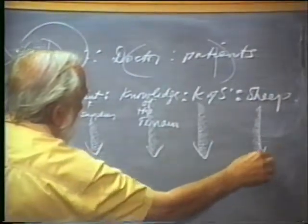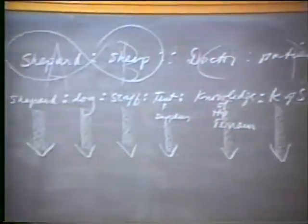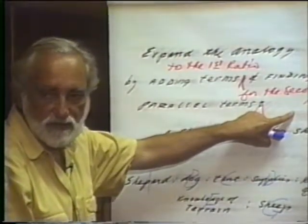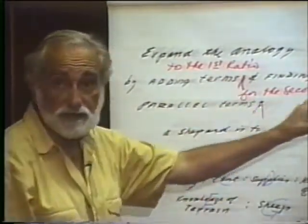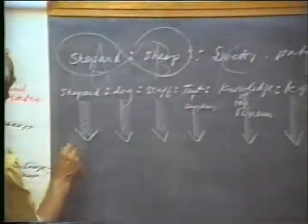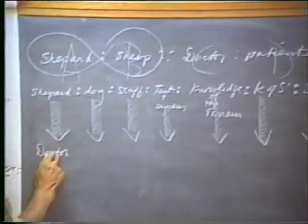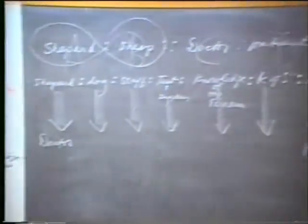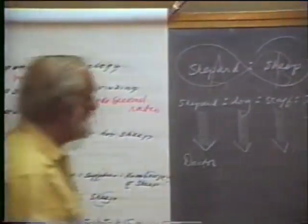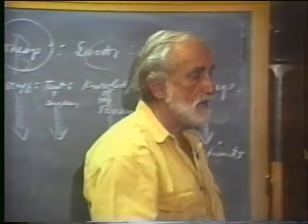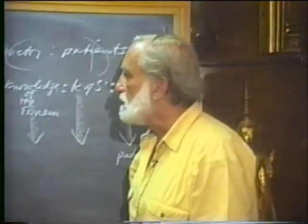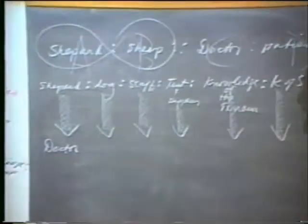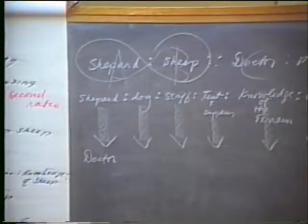Keeping the same order of these terms means that when you now look for parallel terms for the second ratio, you must go in the same order established for the first set. Ideally it should fit into some natural sequence. We'll put the doctor here next to the shepherd and patients here. How do you get the missing terms? Ask analogical questions. As a shepherd must use a dog to help him with his sheep, so a doctor must use something to help him with his patients — a nurse.